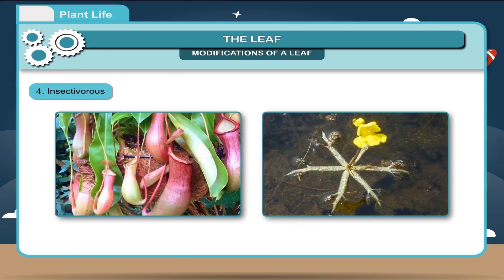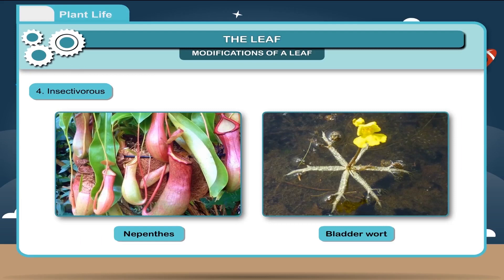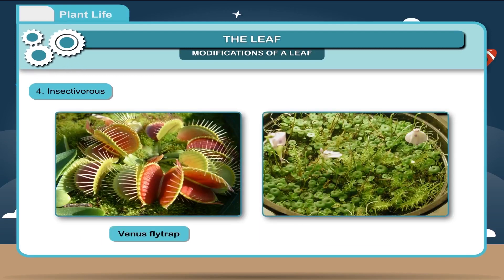Fourth, insectivorous. The leaves of some plants are modified into a bladder or pitcher to trap the insects. These plants are called insect eating or insectivorous plants. Example: nepenthes, bladderwort, Venus flytrap, utricularia.